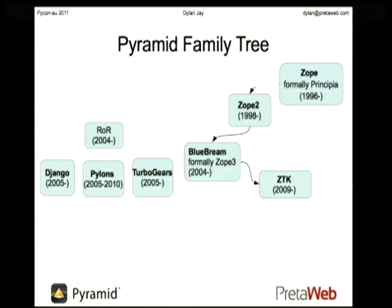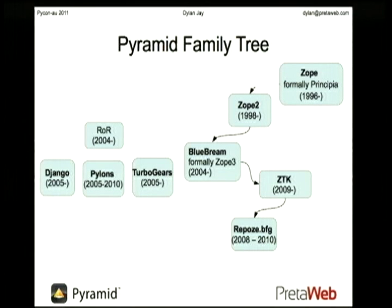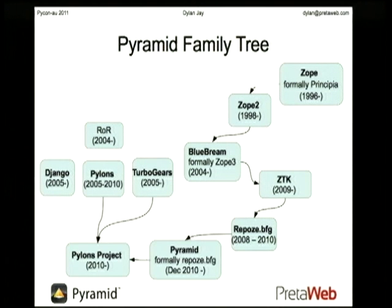The ZTK was split out. Then we had a thing called Repose BFG. They looked at Django, Pylons, the Zope stuff, and tried to get the best of everything and put it together. It's actually building on a lot of different learnings of what a lightweight framework should be. And BFG is actually Pyramid — there's not a lot of difference between them; it was a renaming.